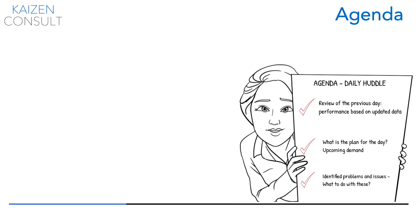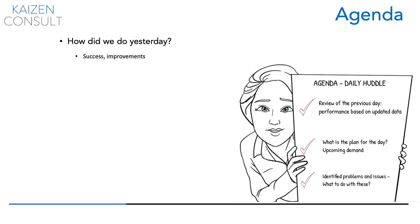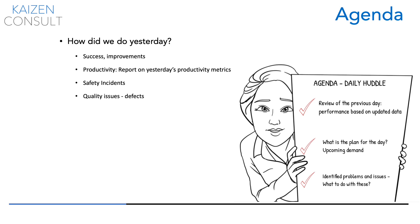Here is a quick agenda for your daily huddle which you can adjust as you gain experience. How did we do yesterday? Any successes? Improvement done? Report on yesterday's productivity metrics and critical metrics. Any safety incidents — were there any, and what will be done? Any quality issues identified the previous day? Anything to help identify a problem to fix today? New problems identified for the Kanban parking lot?